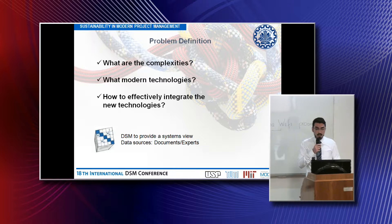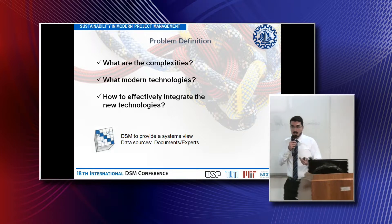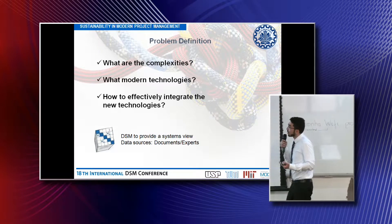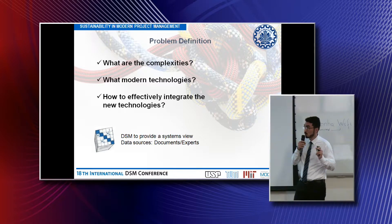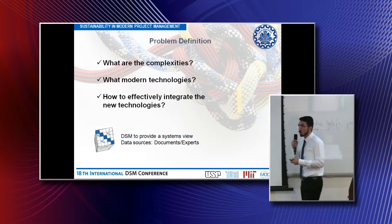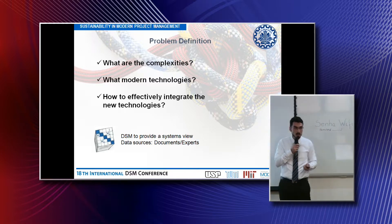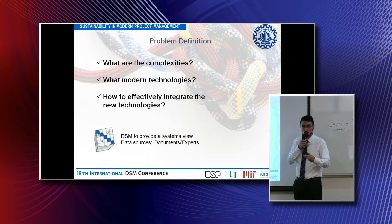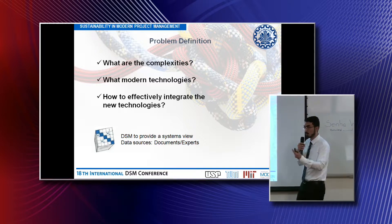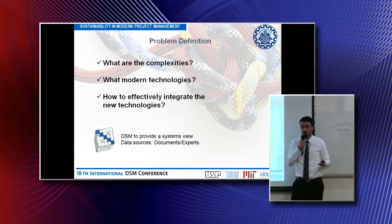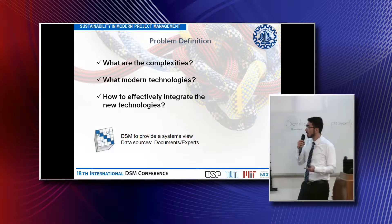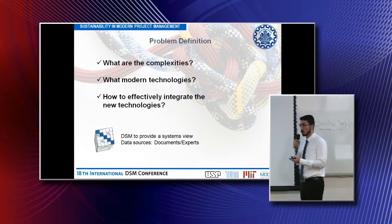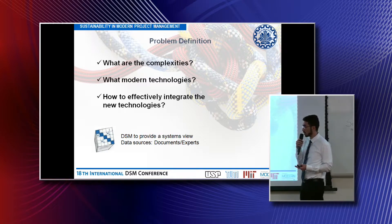We are proposing to use the DSM to help us gain a systems view over the process architecture, to help us answer these questions: What are the complexities of the process architecture that lead to the high human error rate that leads to accidents? And what modern technologies can be used to reduce the chance of human error, and how to effectively integrate those technologies into the process architecture?